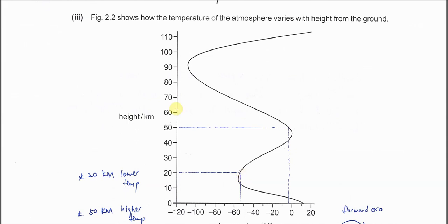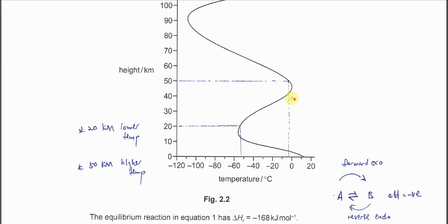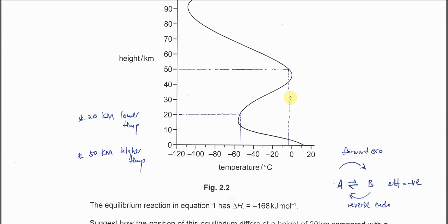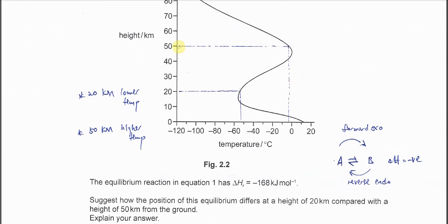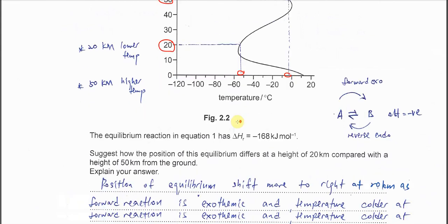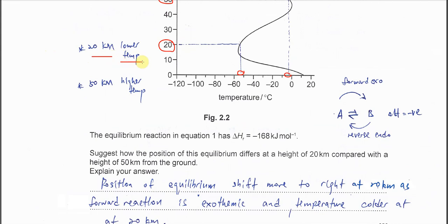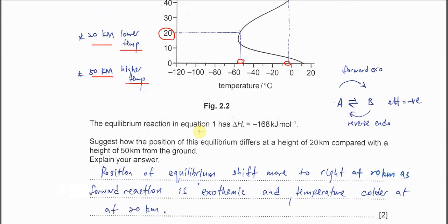Part 3: Figure 2.2 shows how the temperature of the atmosphere varies with height from the ground. From this graph, when it's 50 km, the temperature is higher. At 20 km, the temperature is lower. From this graph we get this information: 20 km lower temperature, 50 km higher temperature. The equilibrium of the reaction is given, so it's negative 168, delta H is exothermic.